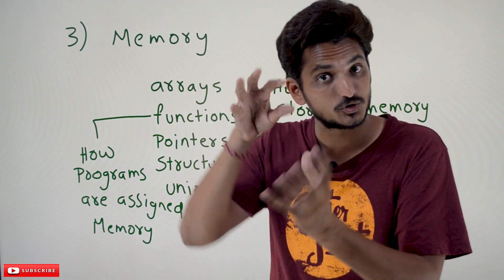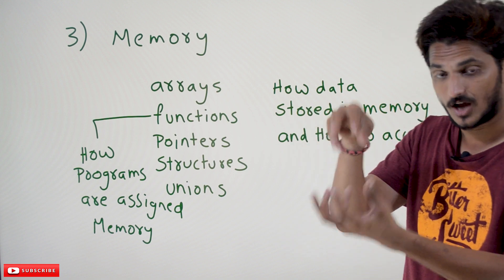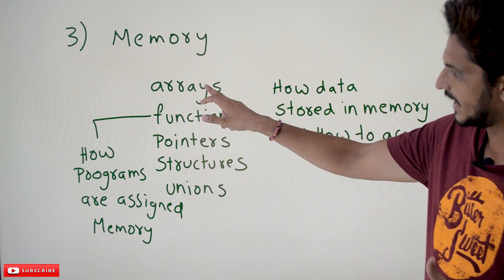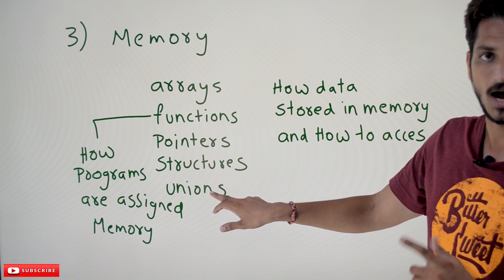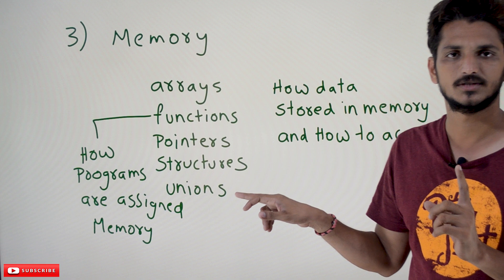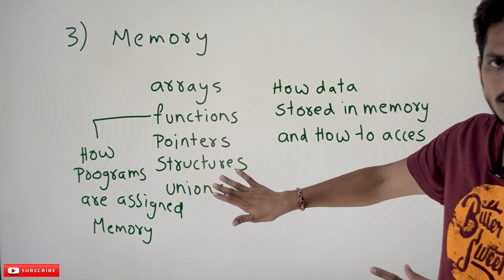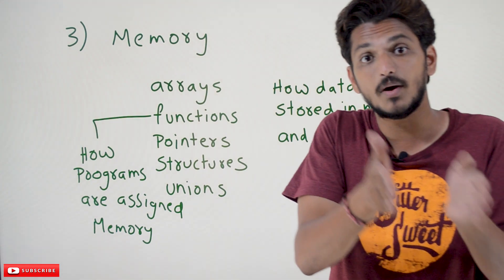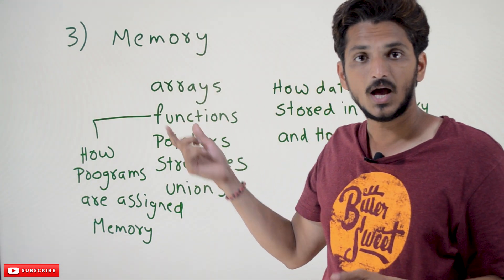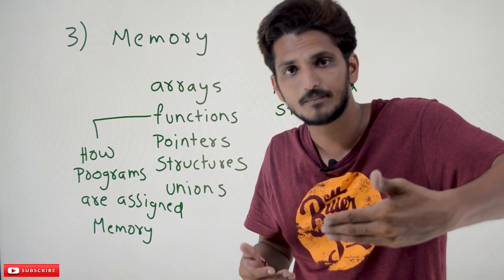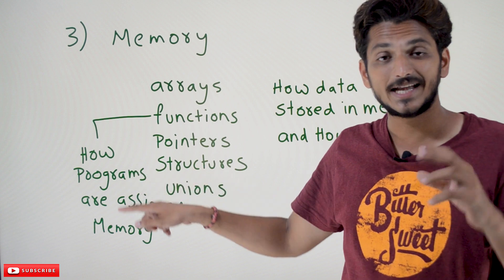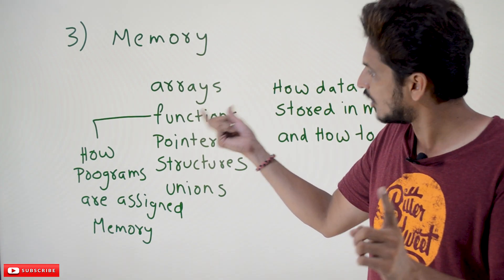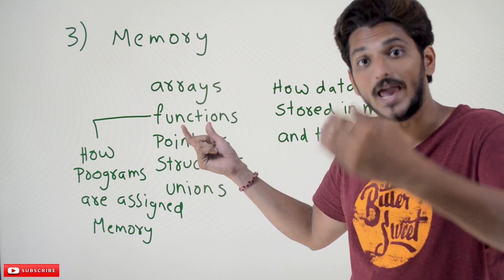You should have a clear graphical intuition of memory — how data is stored and accessed. This is the key point when studying arrays, pointers, structures, and unions. When studying functions, you will understand how a program is stored in memory and how memory is allocated to a program, which helps you understand the code deeply.